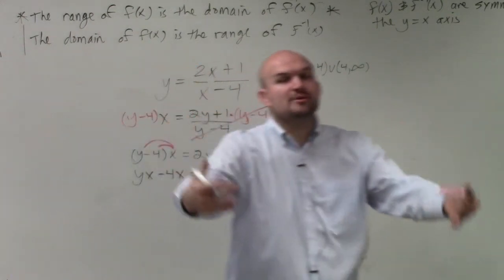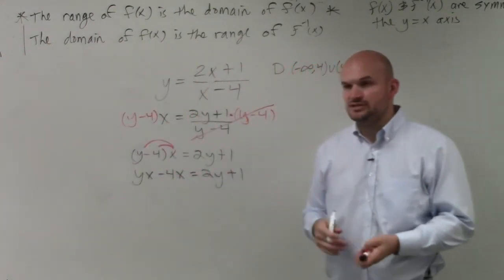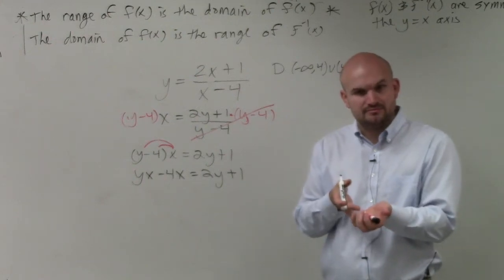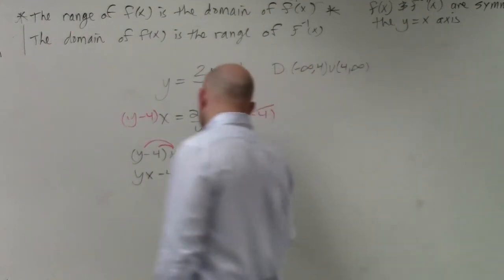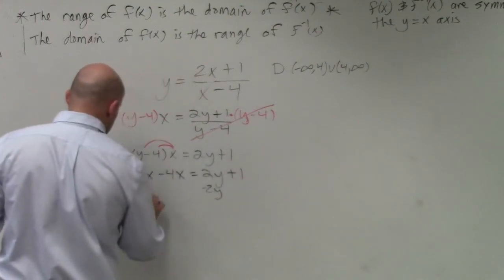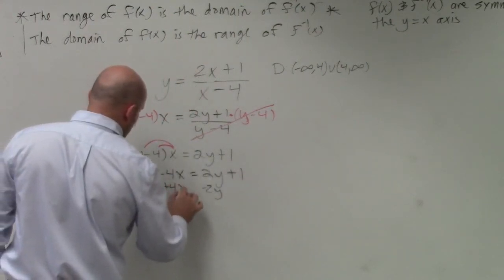Now, since I have distributed it, now is it easier to get the y's to the same side? Yes. So I will subtract the 2y on both sides, and I'll add a 4x on both sides.